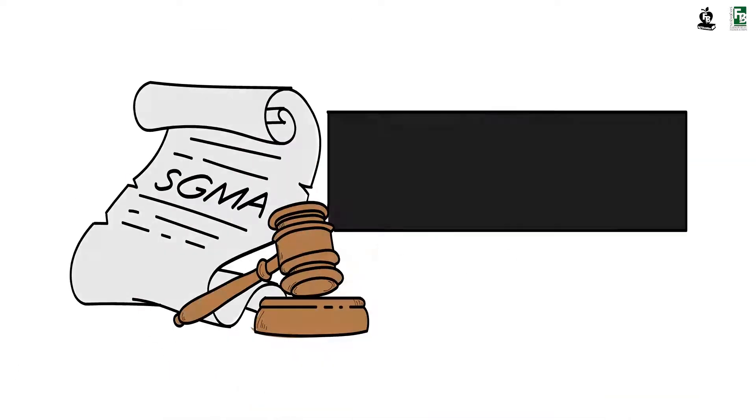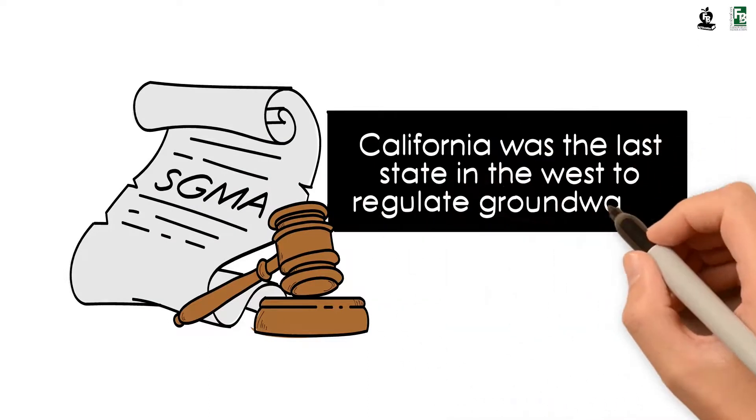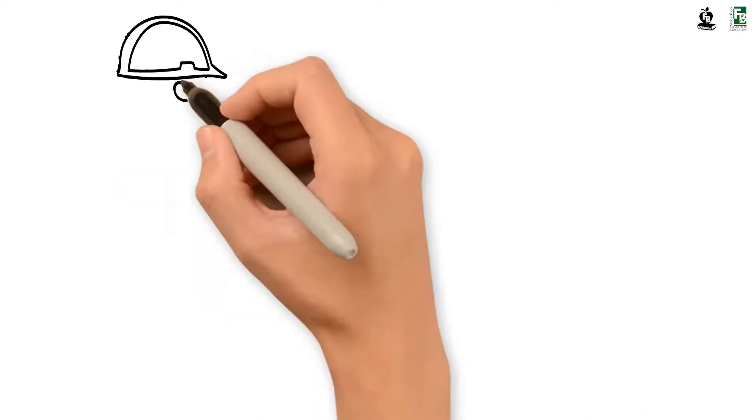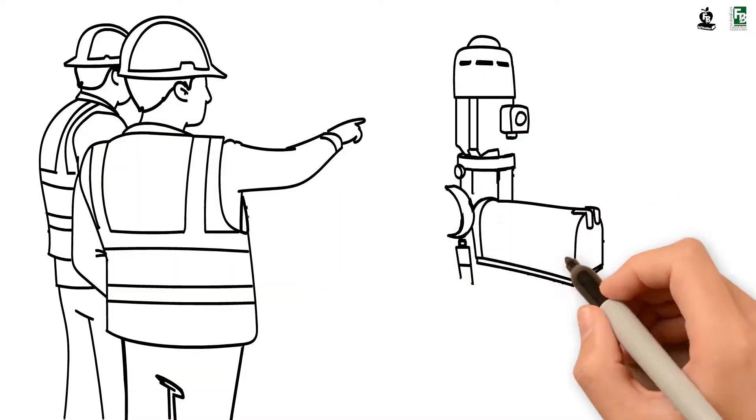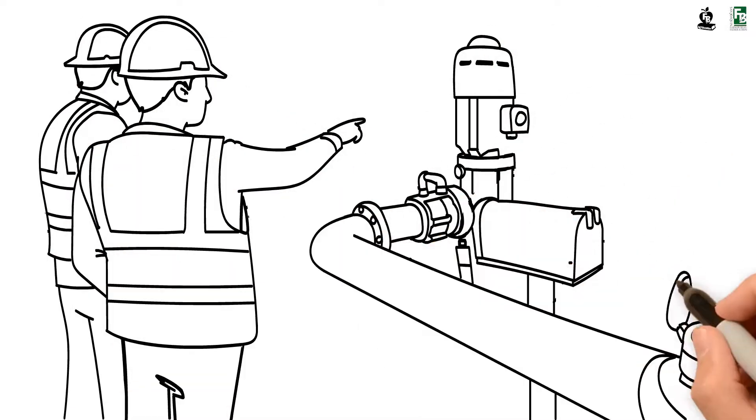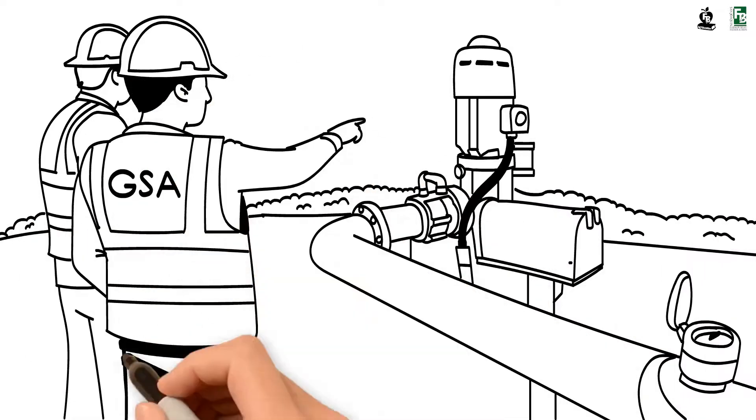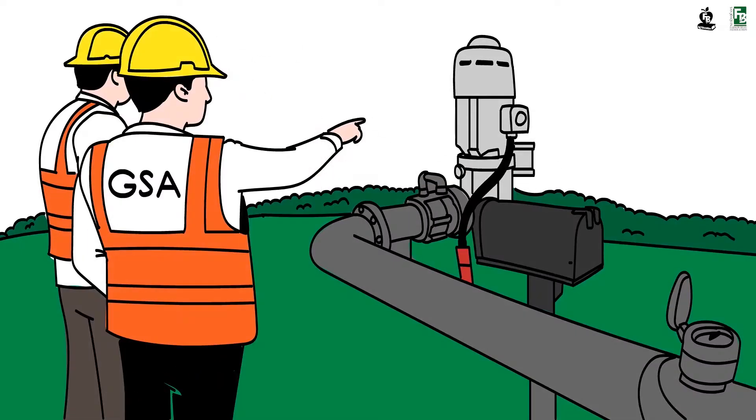When SGMA became law, California was the last state in the West to regulate groundwater. SGMA empowered local agencies with greater authority to manage local groundwater. Local agencies will regulate and enforce usage as a Groundwater Sustainability Agency, or GSA.